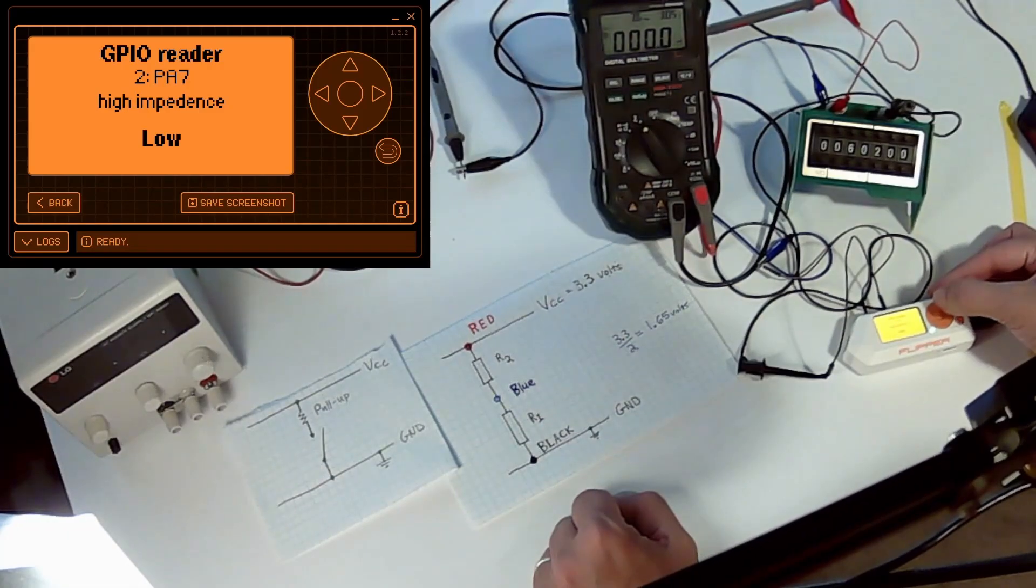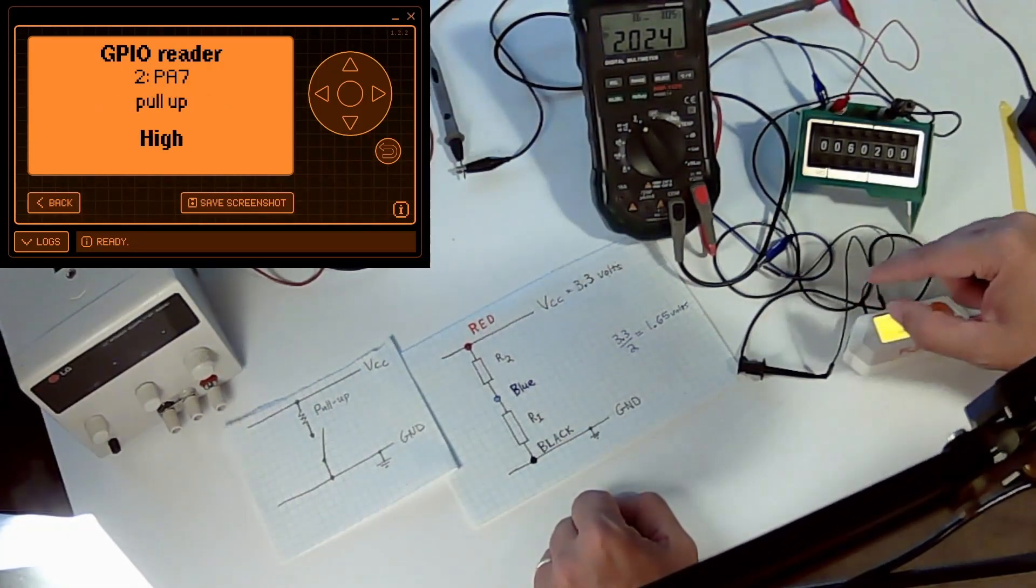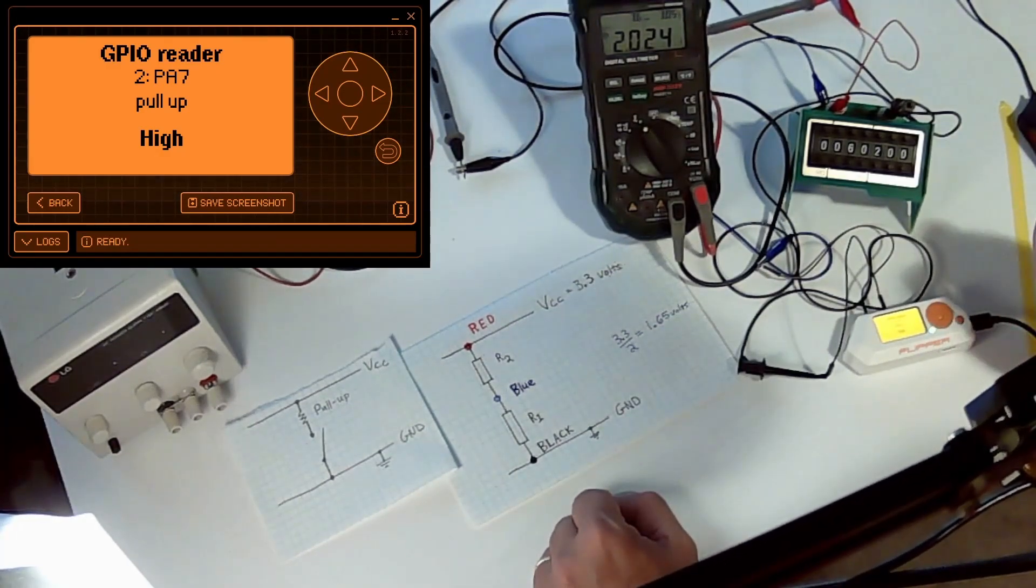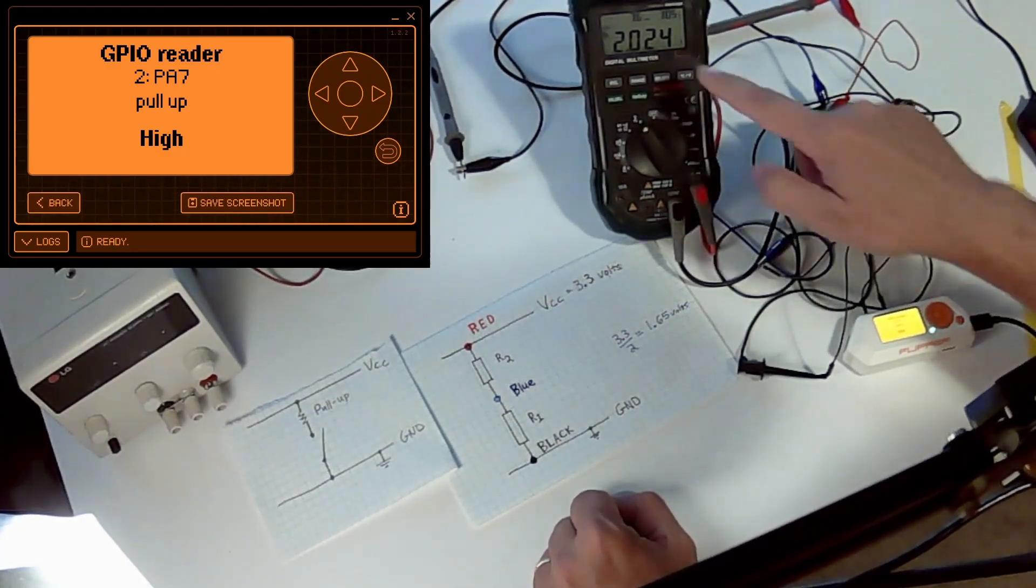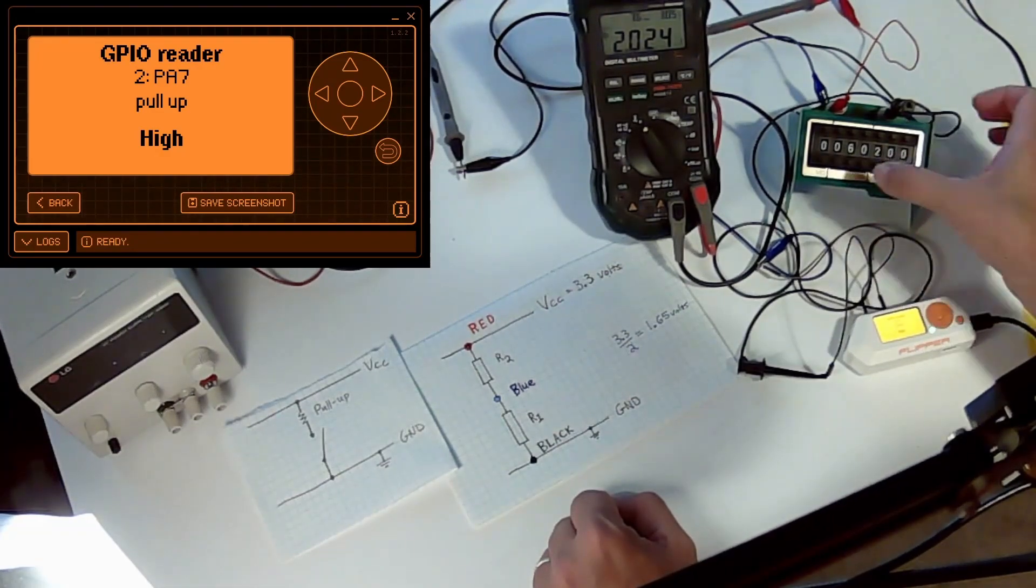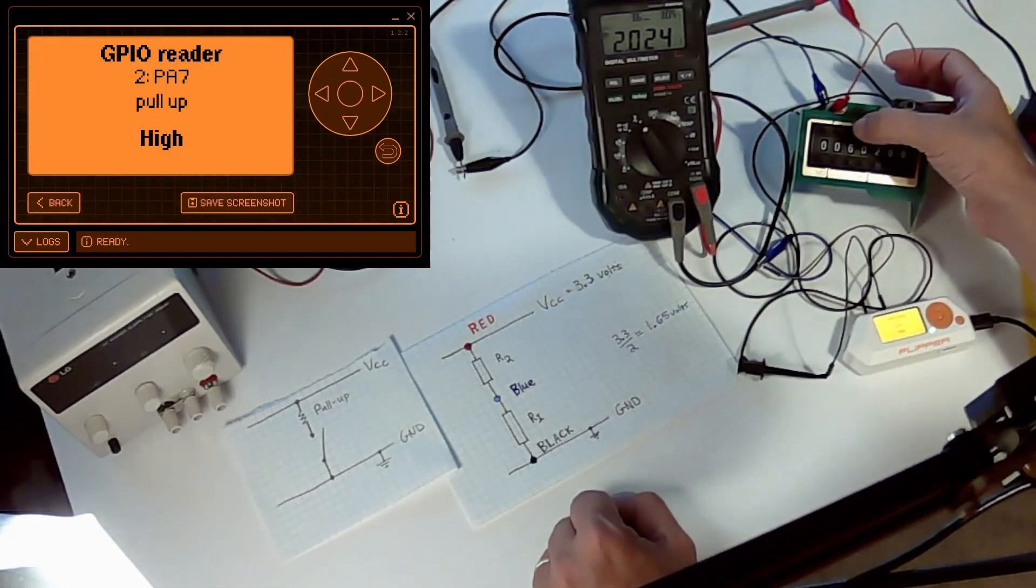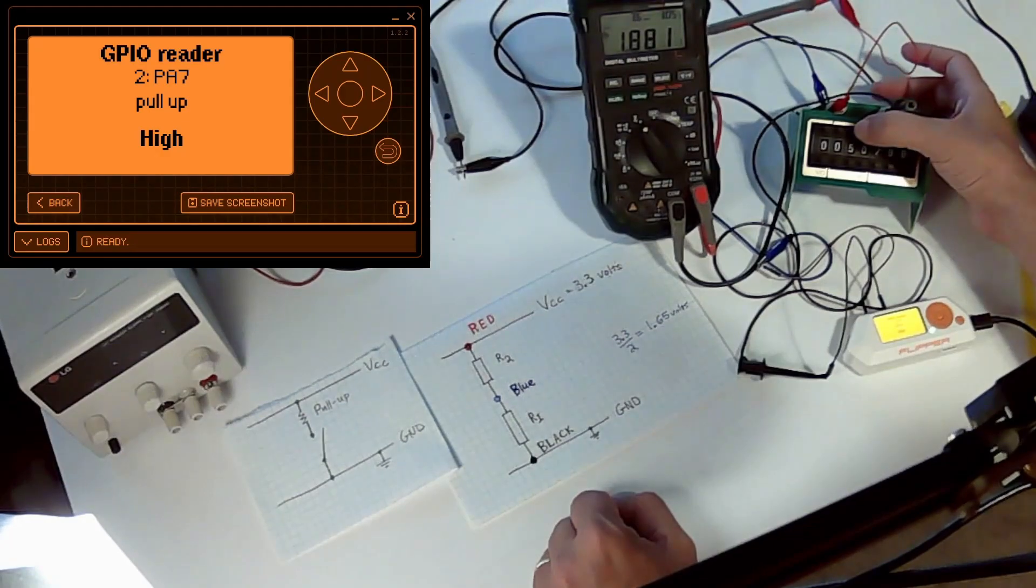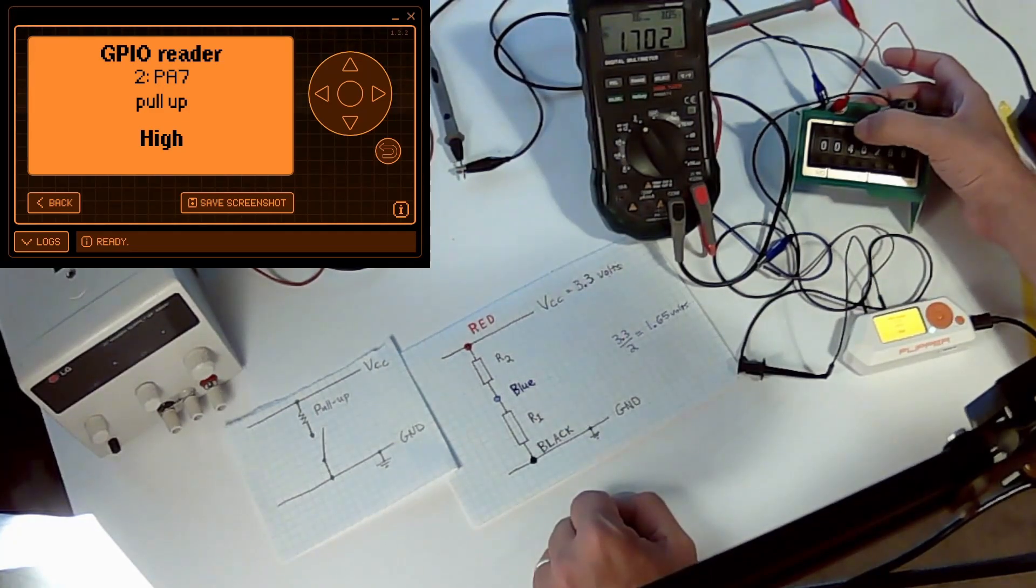All right, so we're going to switch our impedance to high. We have a pull-up high on pin A7 and you can see we're currently at 2 volts with 60, so we need to go down. 1.88, nope. 1.7, 1.4.